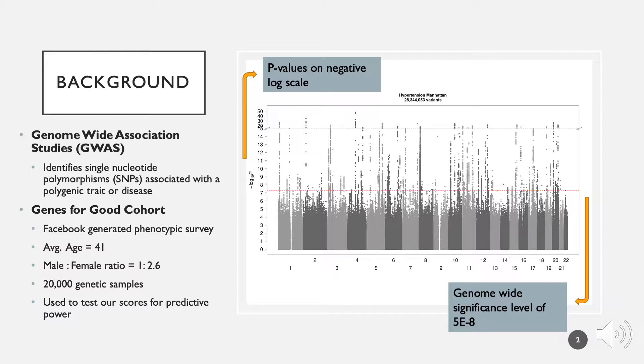These SNPs present more frequently in individuals with the disease than in people without the disease. The results of a GWAS are displayed via a Manhattan plot, seen on the right. Each point represents a unique SNP, and those with p-values above the genome-wide significant level of 5 times 10 to the negative 8 are considered unique to phenotype positive individuals and are included in the calculation of genetic risk scores.